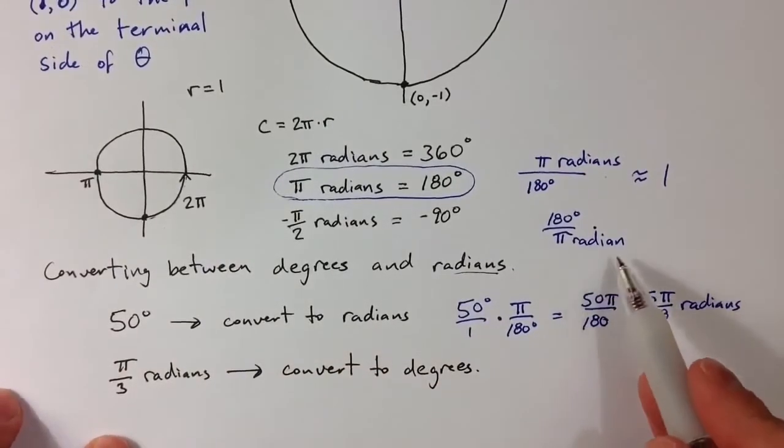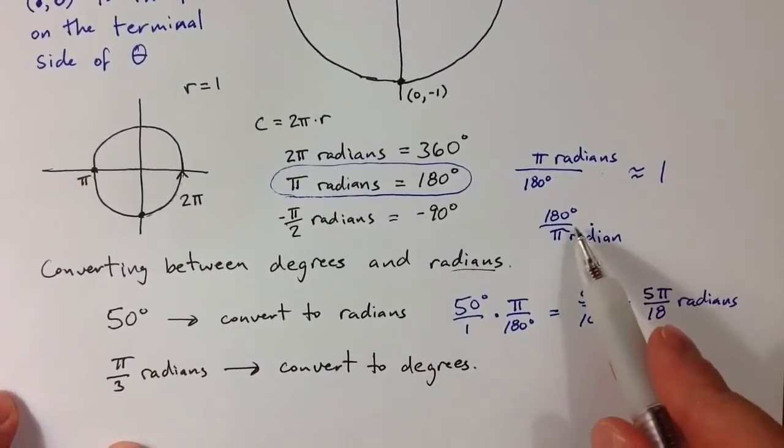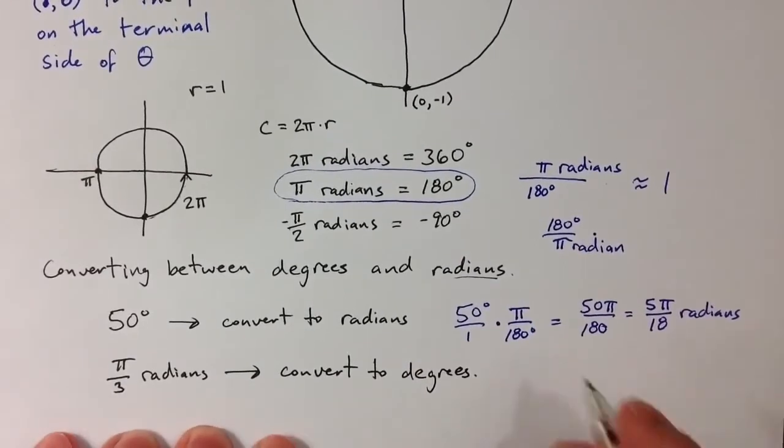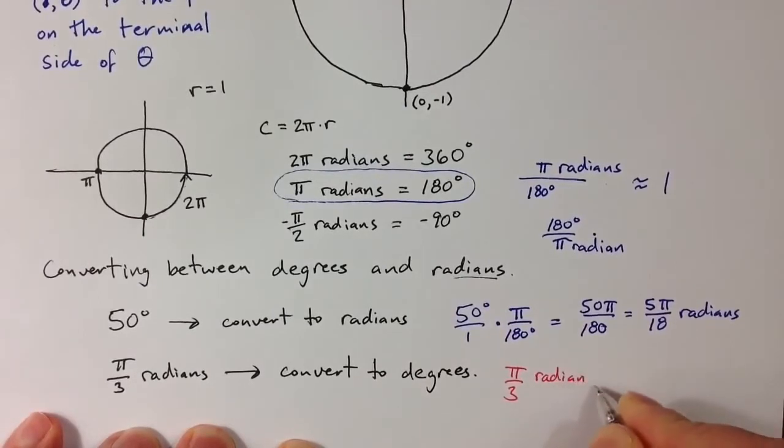If I want to cancel out the radian measure, I can take the ratio 180 degrees over π. So if we take π over 3, because that is in radians, if I multiply that by 180 degrees divided by π radians, the radians cancel.